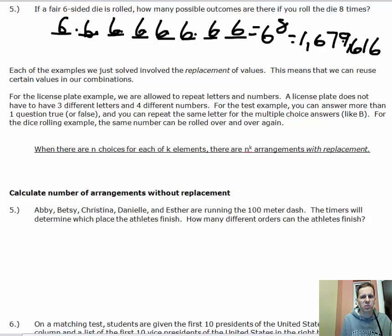Each of the values we just solved involved the replacement of values, which means we can reuse certain values in our combinations. For the license plate examples, we're allowed to repeat letters and numbers. A license plate does not have to have three different letters and three different numbers in it. For the test example, you can answer more than one question true or false, and you can repeat the same letter for the multiple choice answers, like B. For the dice rolling example, the same number can be rolled over and over again. So we say when there are n choices for each of k elements, there are n to the k arrangements with replacement.